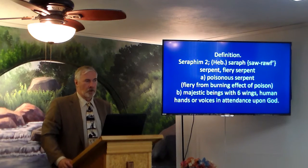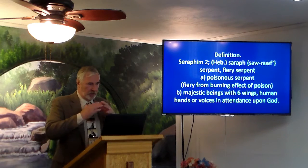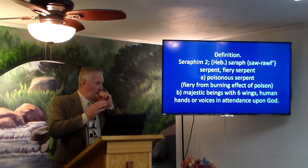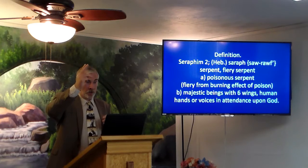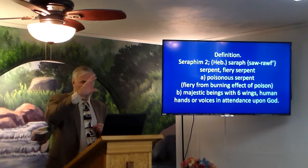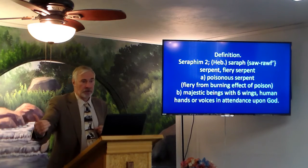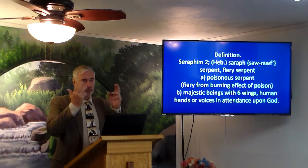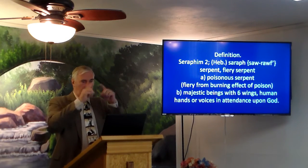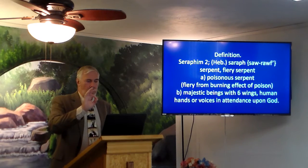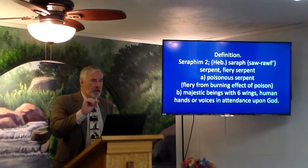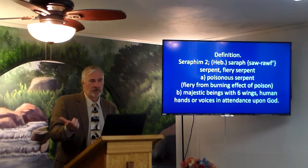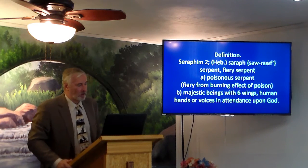Remember when the children of Israel sinned in the wilderness in the book of Numbers, and the bronze serpent was put on a pole — the children of Israel had to look at it if they were bitten by a serpent? The medical symbol today is two serpents on a pole. Lots of medicines we take today are poisons — poison in a controlled environment can be medicine, like when my daughter got bit by a rattlesnake.